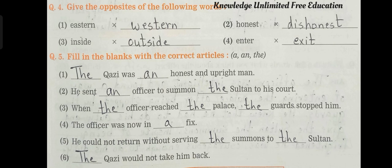Question number 4: Give the opposites of the following words. Number 1 — Eastern: Western. Number 2 — Honest: Dishonest. Number 3 — Inside: Outside. Number 4 — Enter: Exit.